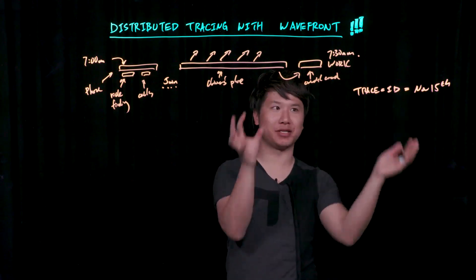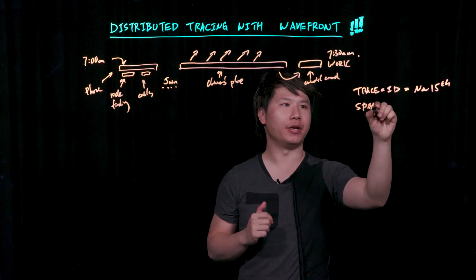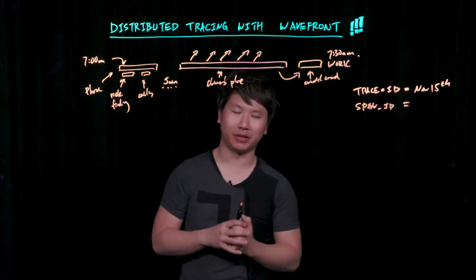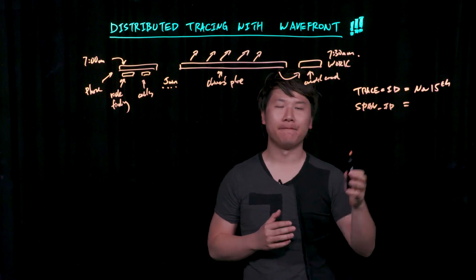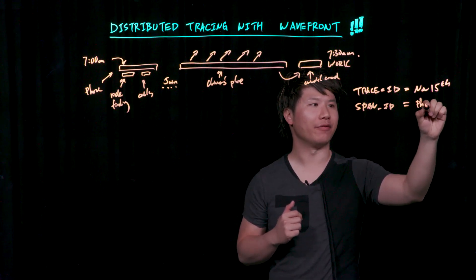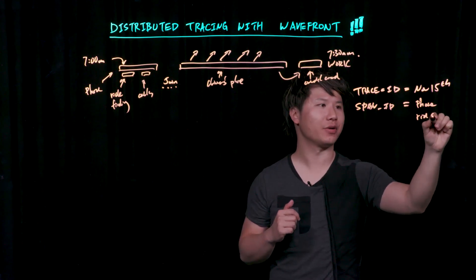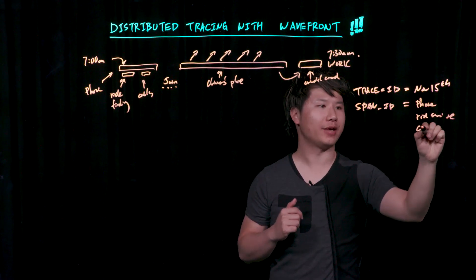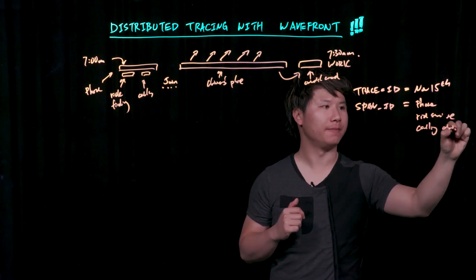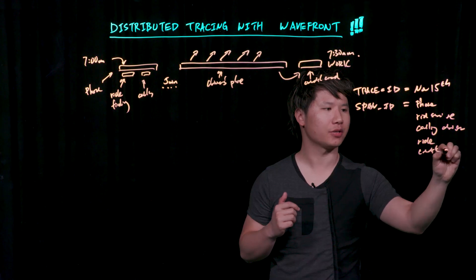Finally, there's a transaction that talks to your credit card company that charges the pre-authorization. All of these small bits of actions that comprise this entire trace is what we call spans. In this particular case, you have the phone, the ride service, the calling of the driver, the actual ride, and the credit card authorization.